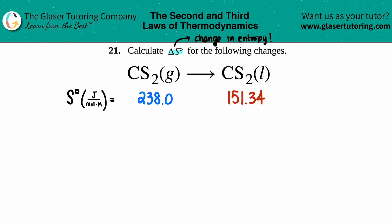This little notch means we have to use standard values. That means we got to go into the back of the textbook to find out what the standard values of CS2 gas and CS2 liquid are. So that's what I did for you already. Now how are we going to find out the total delta S?